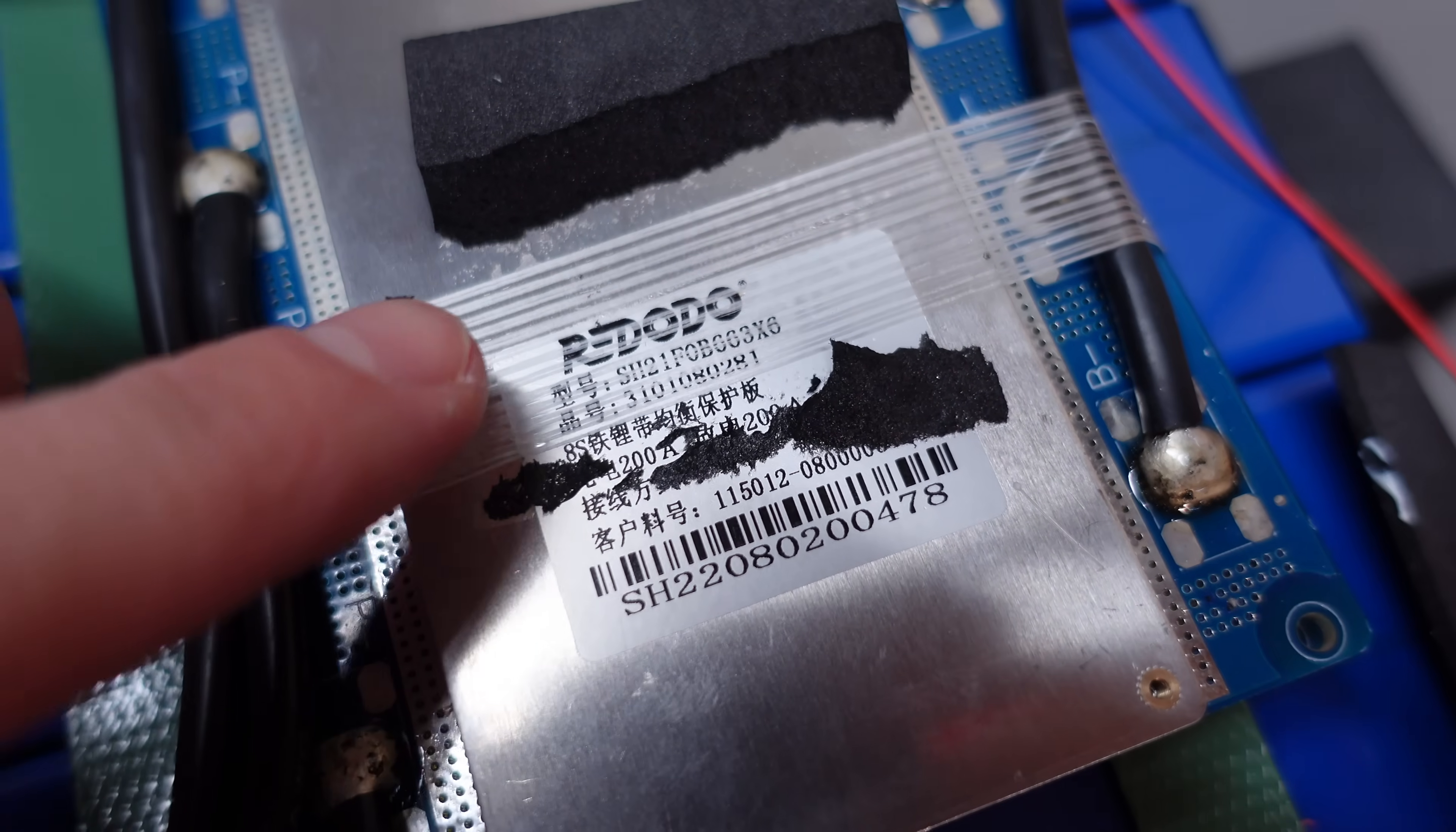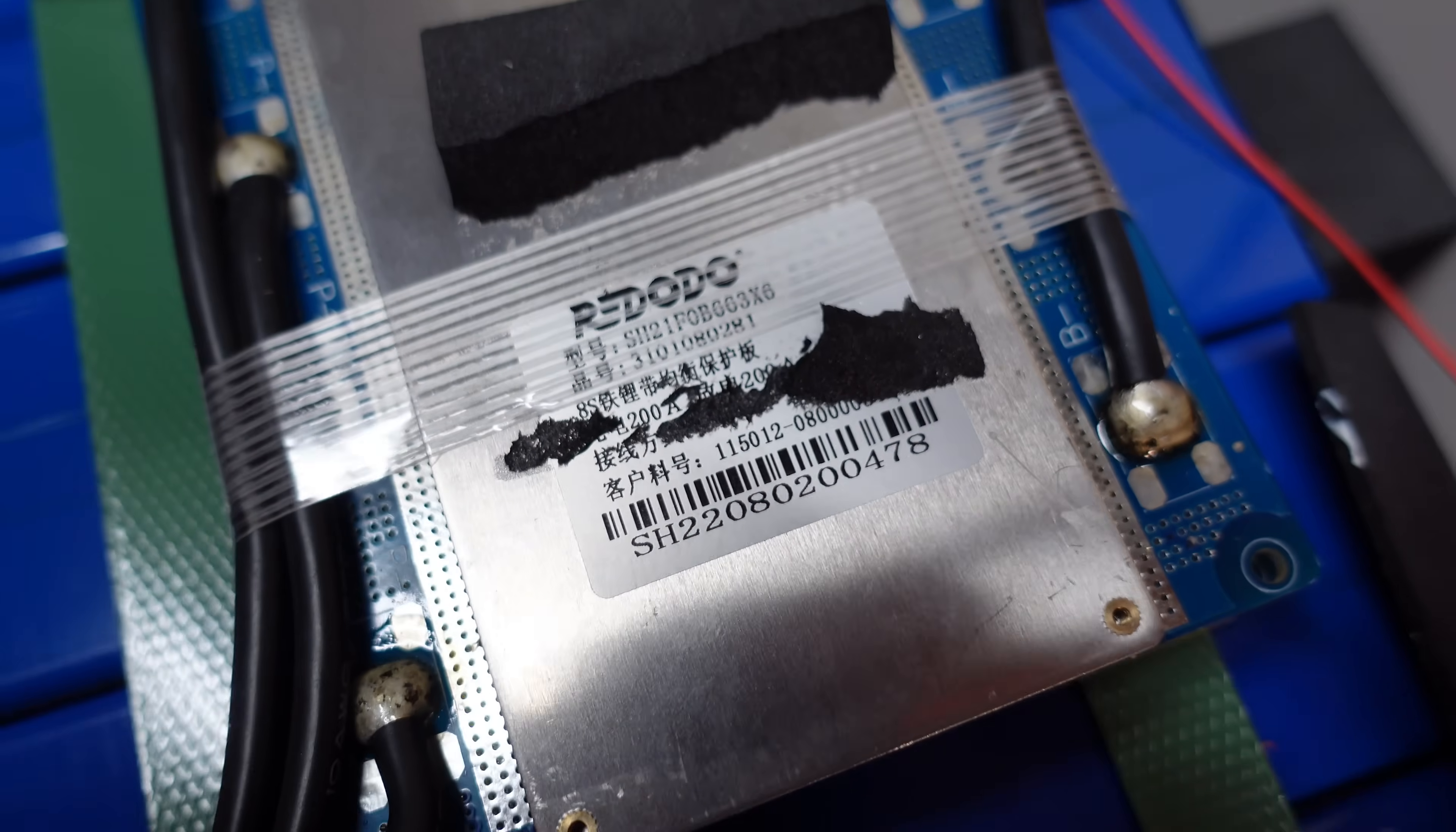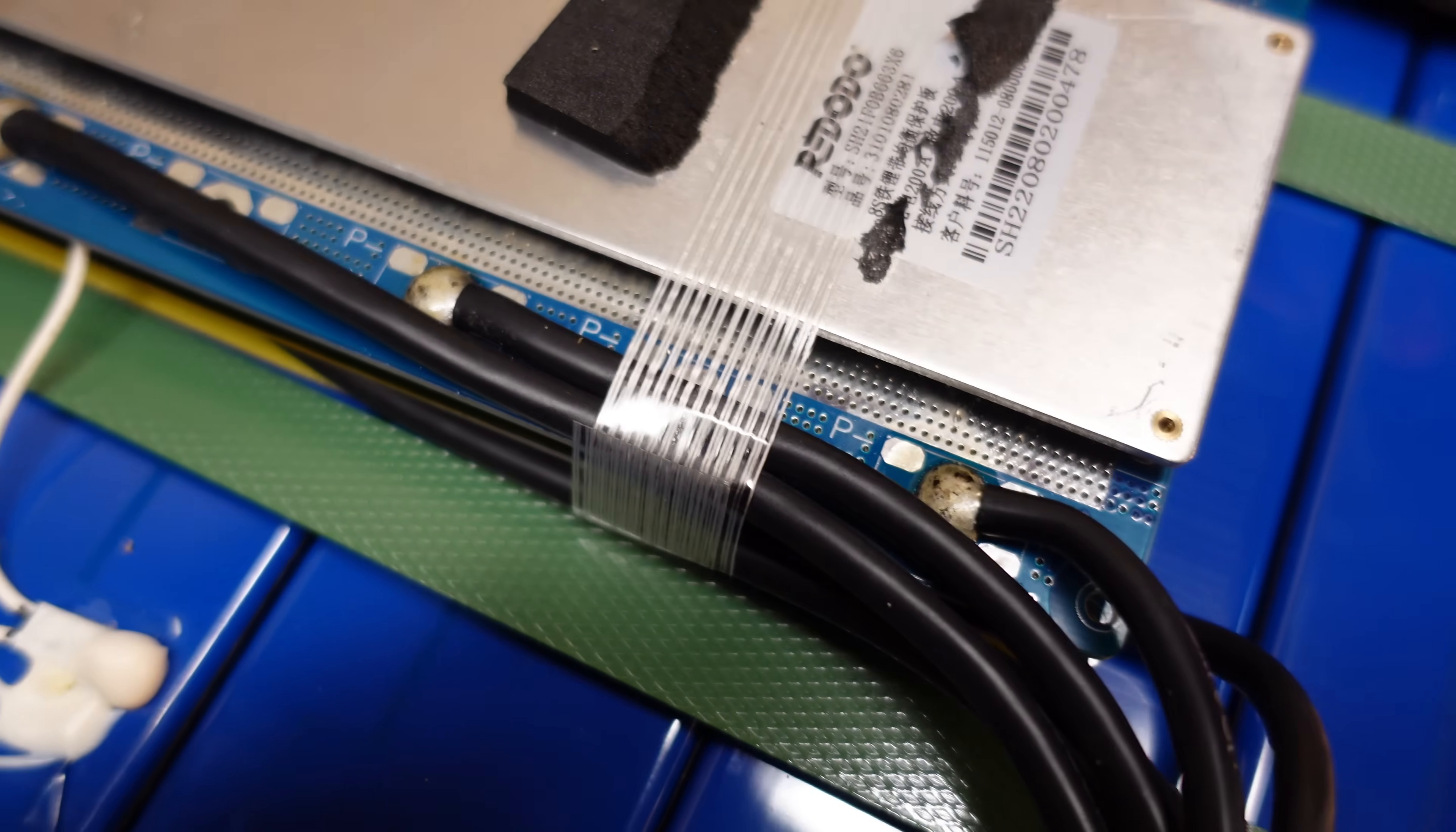So this does appear to be their own brand BMS. And I do see it says 8S and 200 amps down in there. I did notice the wires are soldered onto the circuit board. I don't particularly like soldering, especially in high current applications like this.